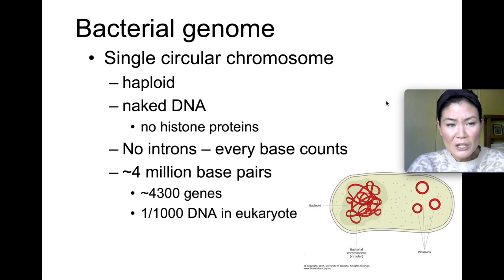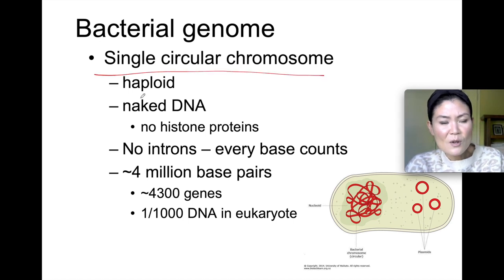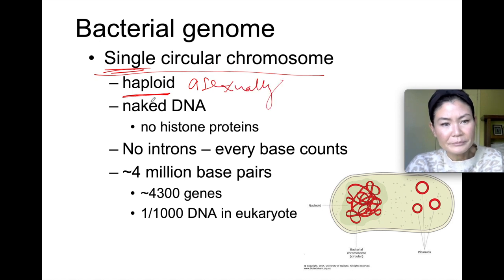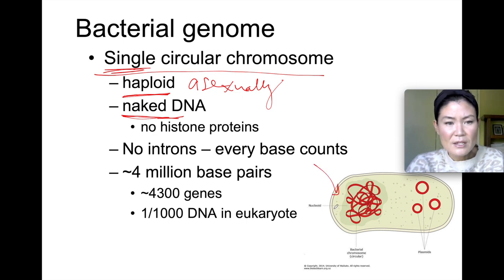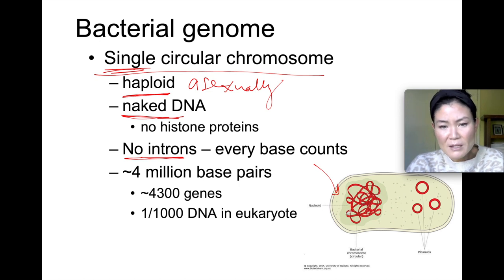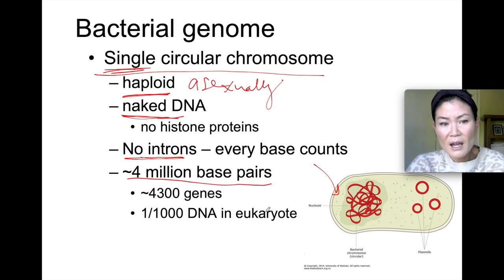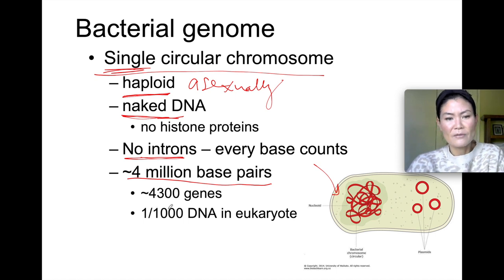The genetic material inside bacteria consists of a single circular chromosome, so they're haploid — not diploid. They reproduce asexually. Their DNA is naked, meaning there are no histone proteins for the DNA to wrap around and no introns, so every nucleotide in the genome counts — it codes for a protein. They have about 4 million base pairs compared to our 3 billion base pairs, about 4,300 genes — roughly one-thousandth of the DNA we have. Their genome is a lot smaller, but every nucleotide counts.